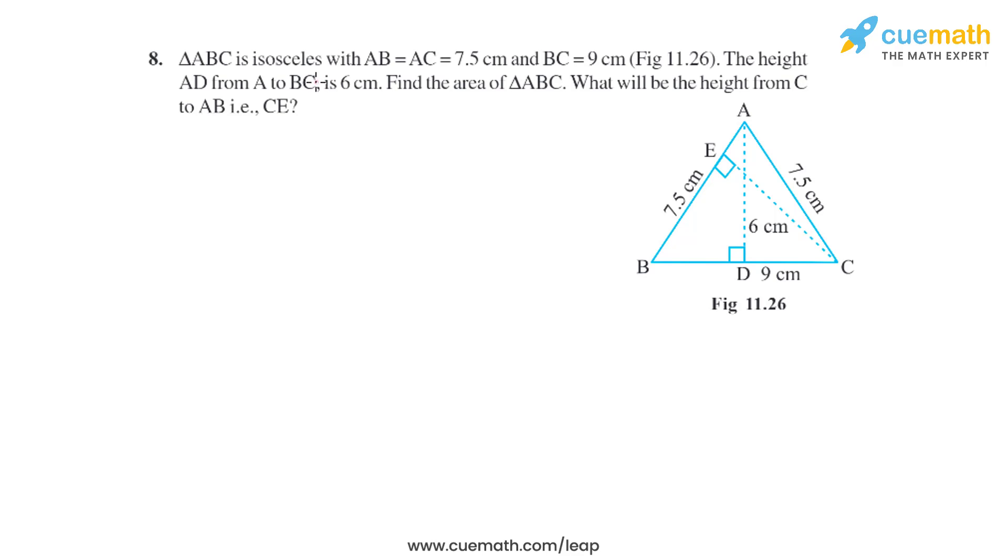Question 8 of this exercise says triangle ABC is isosceles with AB equals AC equals 7.5 centimeters and BC equal to 9 centimeters. The height AD from A to BC is 6 centimeters. Find the area of triangle ABC. What will be the height from C to AB, that is CE?